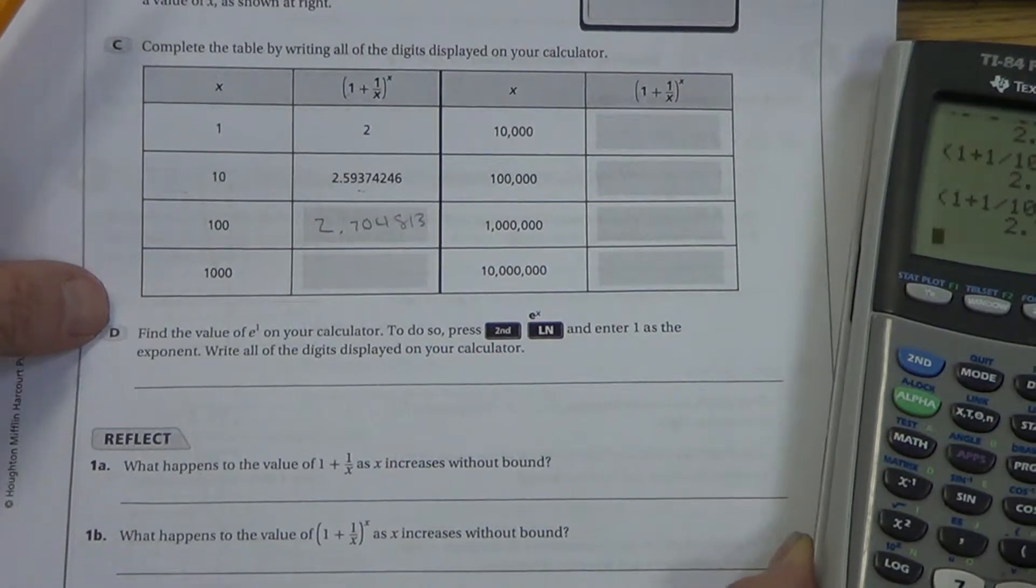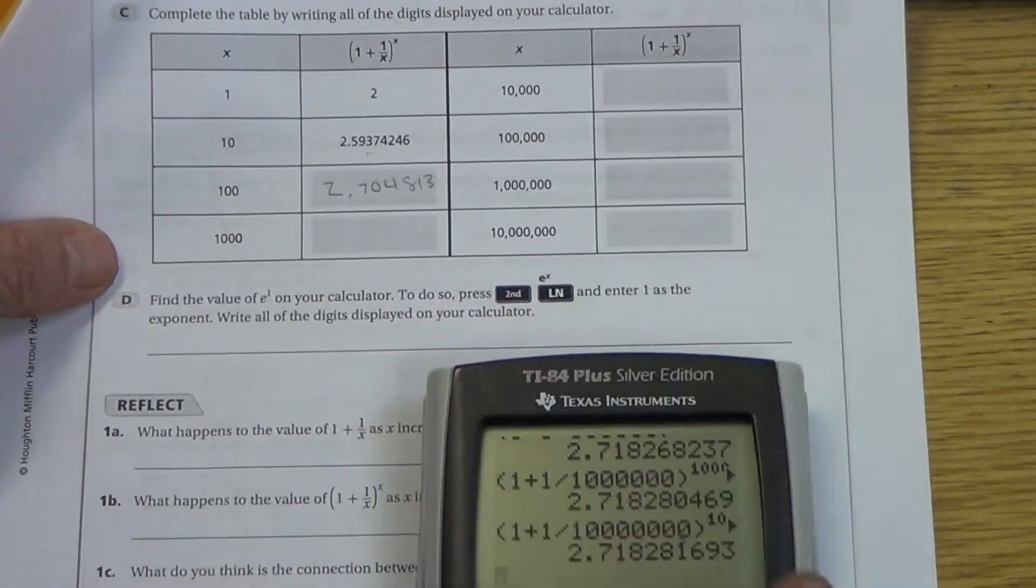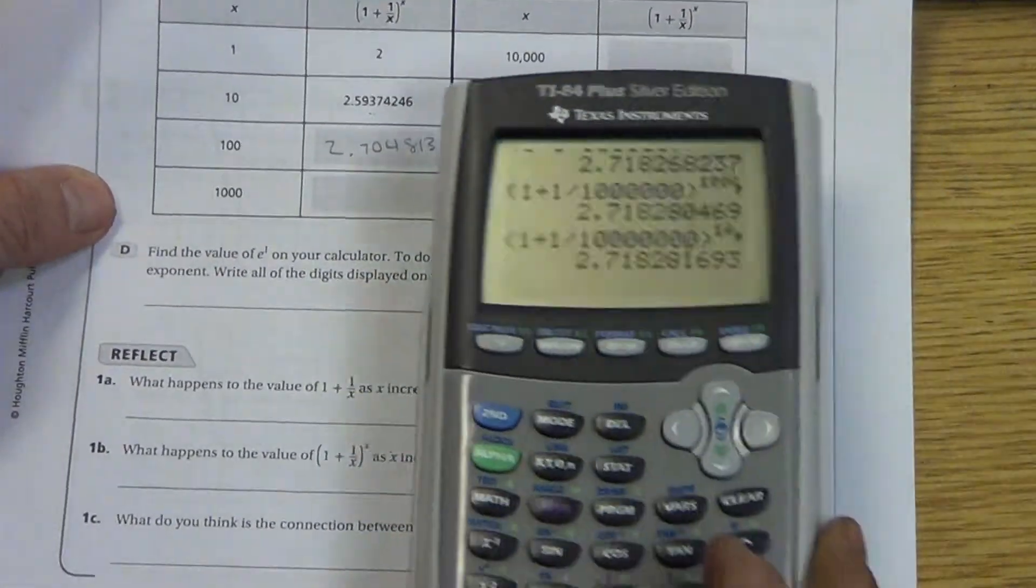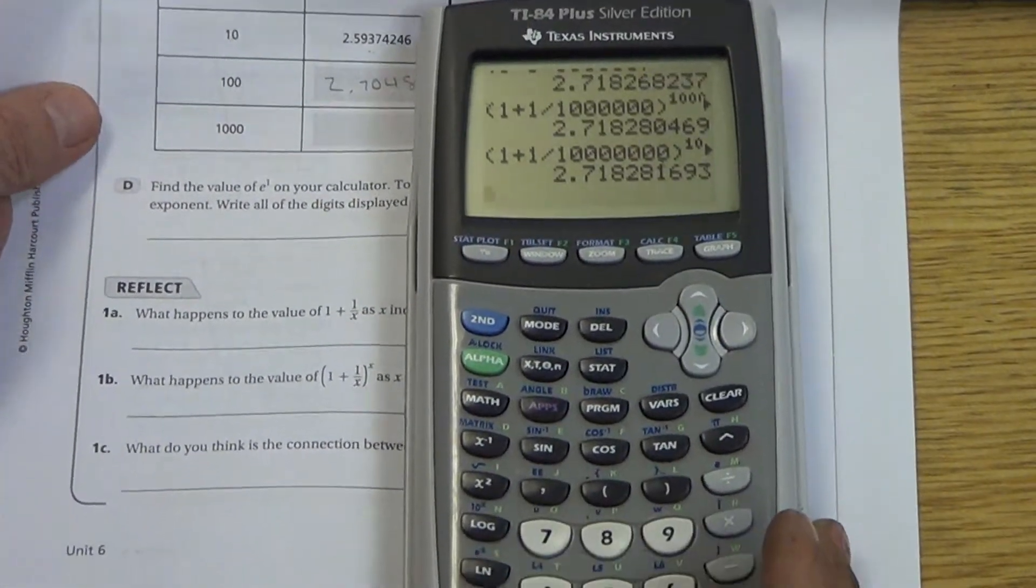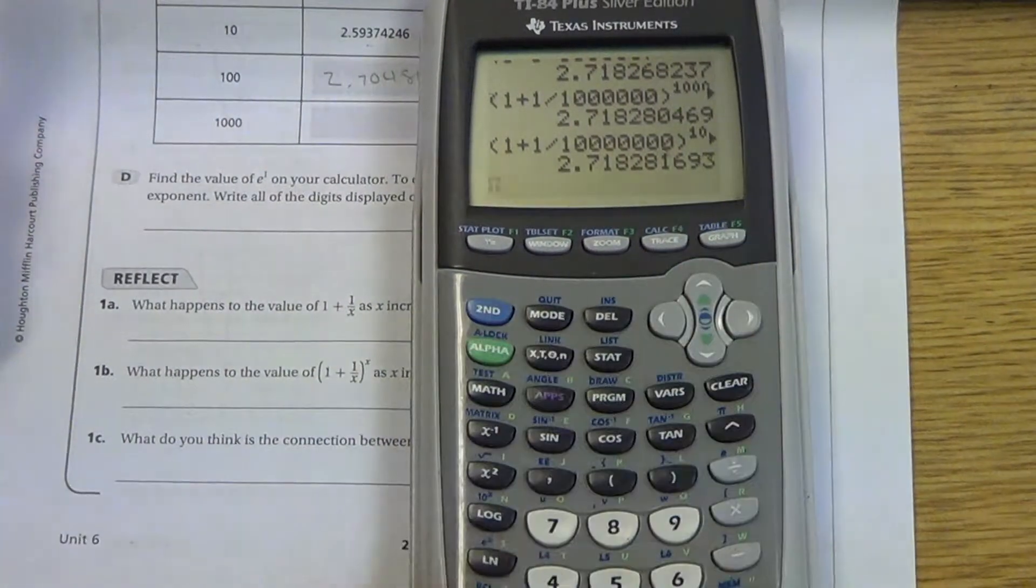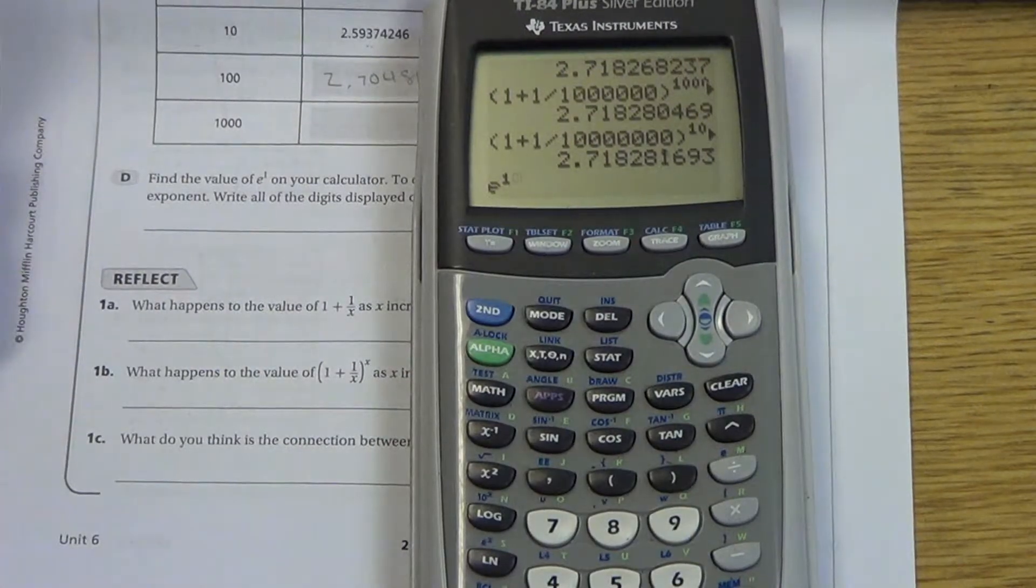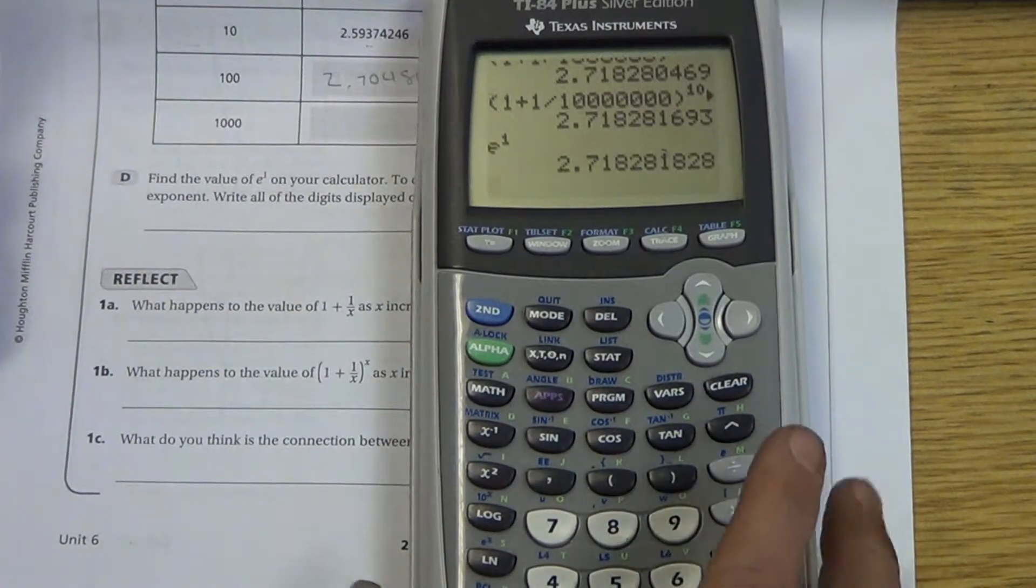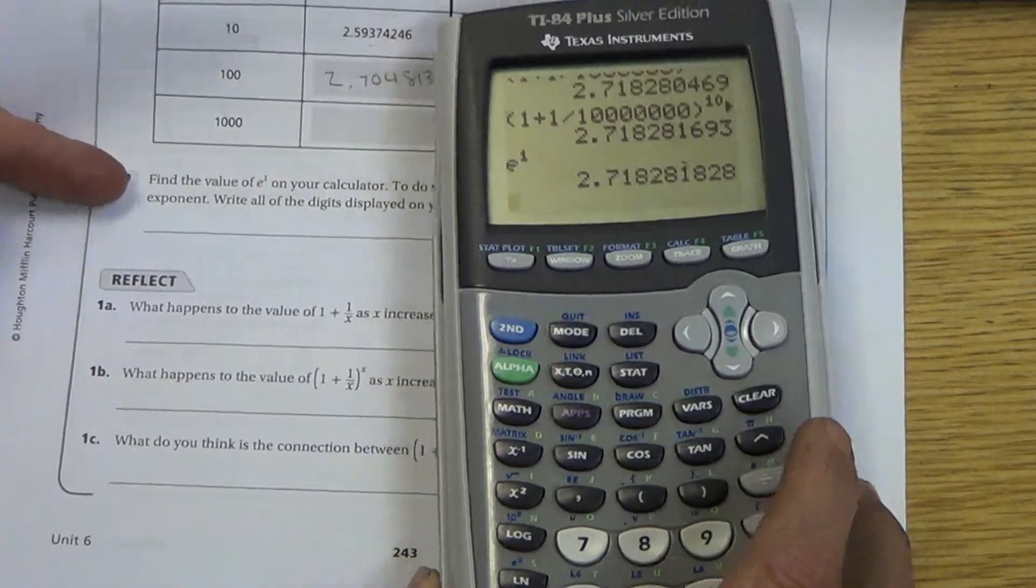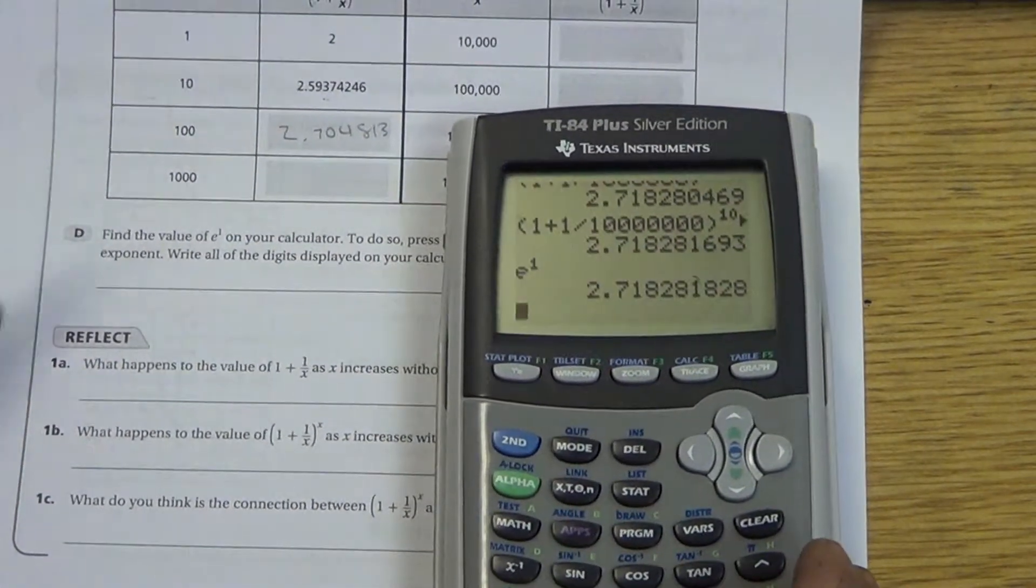They ask you next to go on your calculator and find the value of E. So, on the calculator, if you look, we go second, LN, and there's E. Put it to the first power. Look at what you get there. Go ahead and copy that entire number down, right here on 1D.